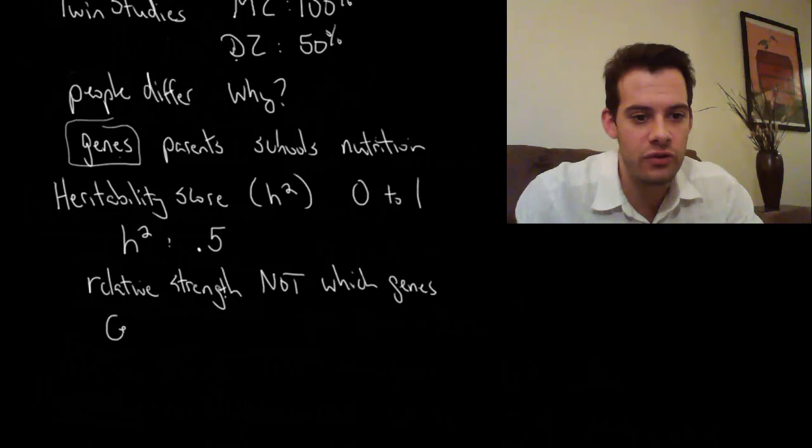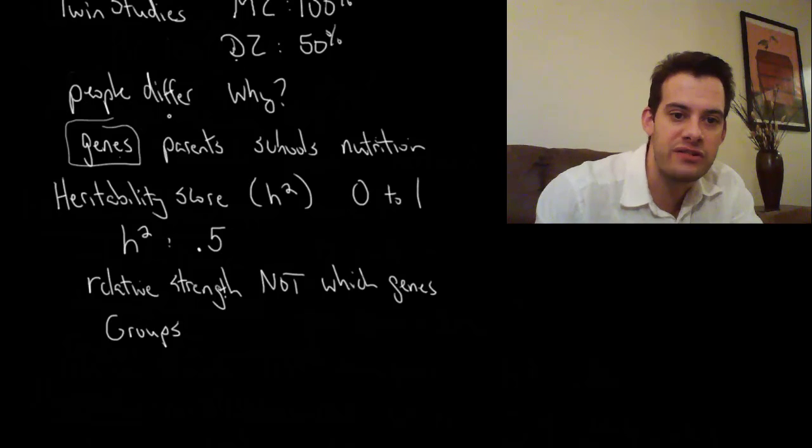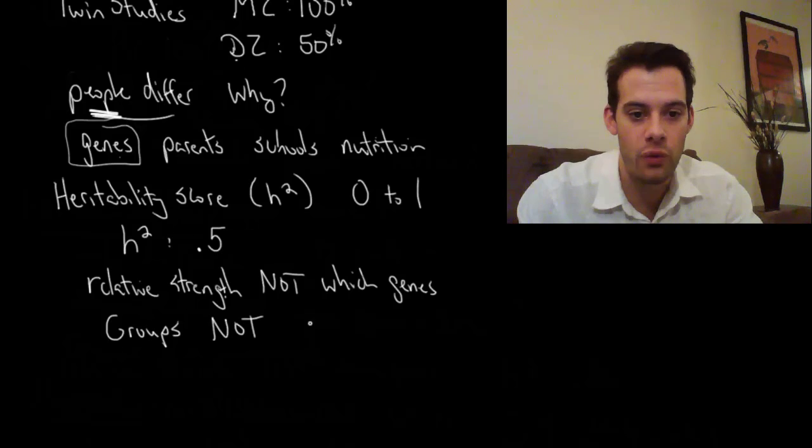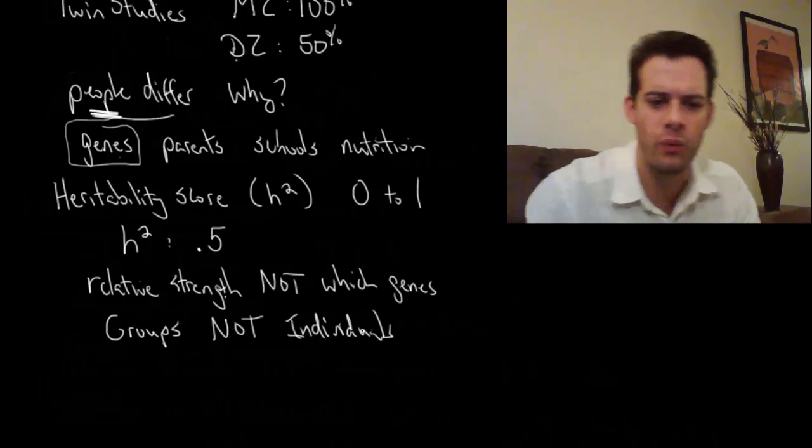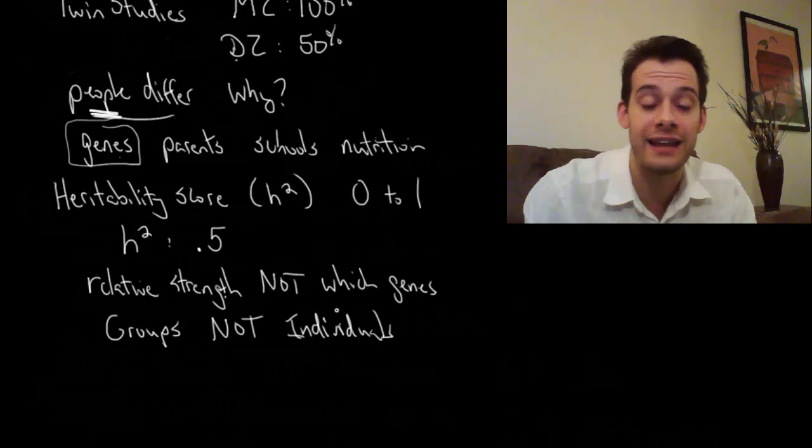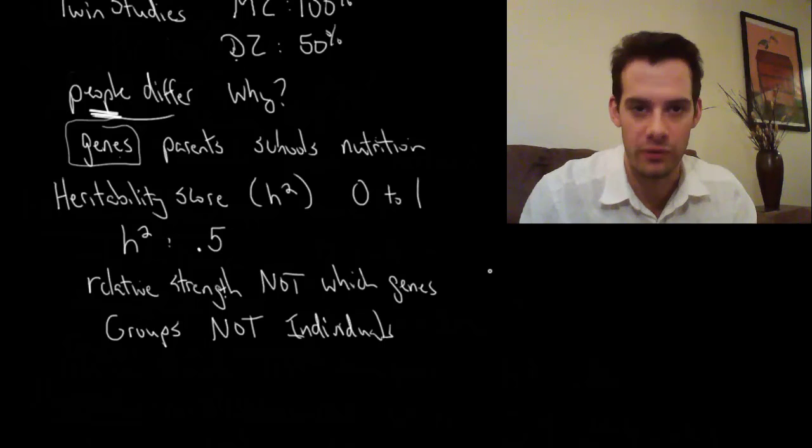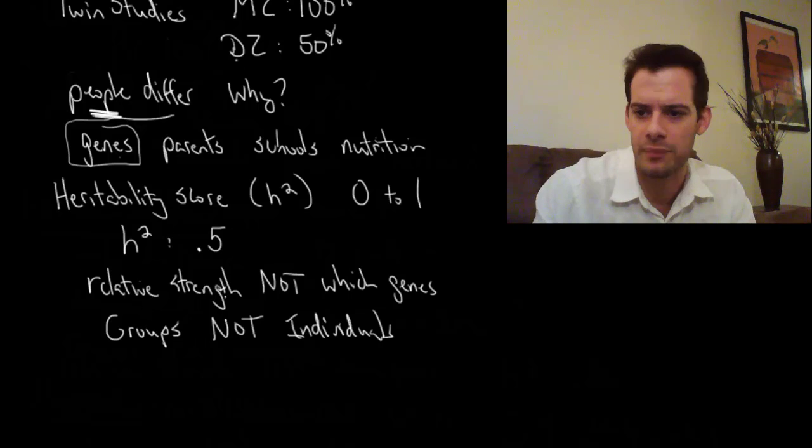The second thing to keep in mind is that heritability scores are always about groups. Because we're asking the question why people differ—people, multiple. It has to be about groups of people. Heritability scores are not about individuals. It doesn't tell you anything about your individual score. You don't say well I scored 100 on an IQ test so 50 points came from my genes. It's not saying that at all. It's saying you scored 100, somebody else scored 110, and about half of the reason for your differences is genes. You have different genes than that person, and the other half is environment. And of course this is for many people, for a large group of people not just you and one other person. So those are two key things to keep in mind for heritability—it's relative strength and it's about groups not individual scores.